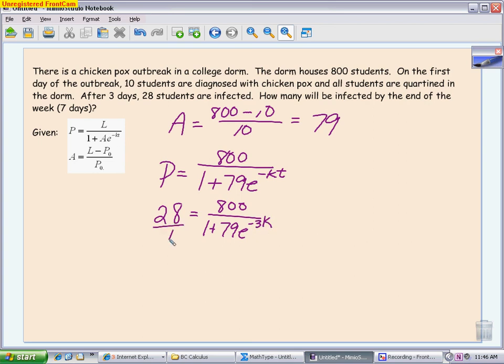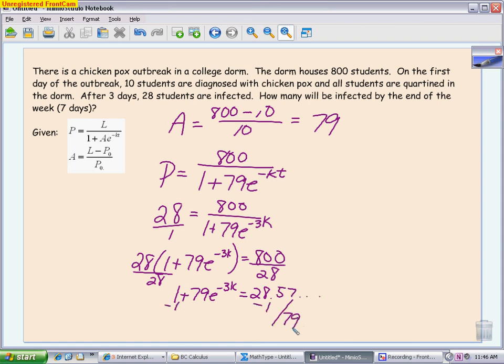Cross multiply. We get 28. I'm not going to distribute. It's easier if we leave it in front of the parentheses. We're going to divide by 28. Here's where you really start doing a lot in your calculator. So we have 1 plus 79e to the negative 3K equals 800 divided by 28, which I'm keeping on my calculator. It's around 28.57 and so on. Subtract 1, divide by 79. And here is where you can really start doing most of the calculation on the calculator and not writing nearly as much down. We're going to take the natural log of both sides. We're going to divide both sides by negative 3. In the end, we end up getting a K value of around 0.3508.